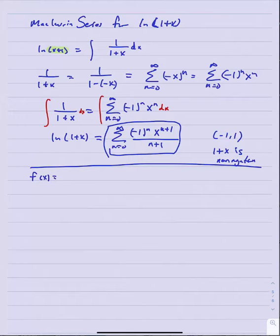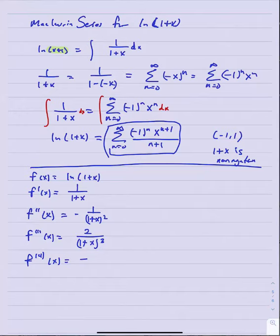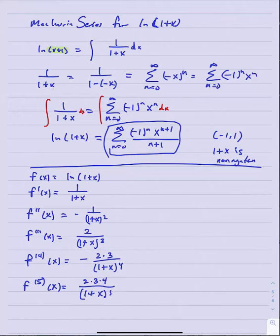Looking at the derivatives: the first derivative is 1 over 1 plus x, the second is negative 1 over 1 plus x squared, and the third derivative switches to positive, showing an alternating sign pattern. The fourth derivative is negative 2 times 3 over 1 plus x to the fourth, and the fifth derivative is positive 2 times 3 times 4 over 1 plus x to the fifth. We're finding the Maclaurin series so we evaluate each at zero.